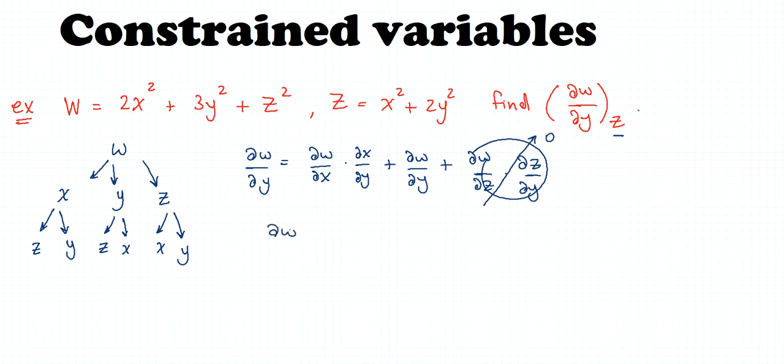We can find dw/dx from the first equation. Let's call this equation one. This is equal to 4x. We can find the value of dw/dy, which is equal to 6y. Again, this is from equation one.